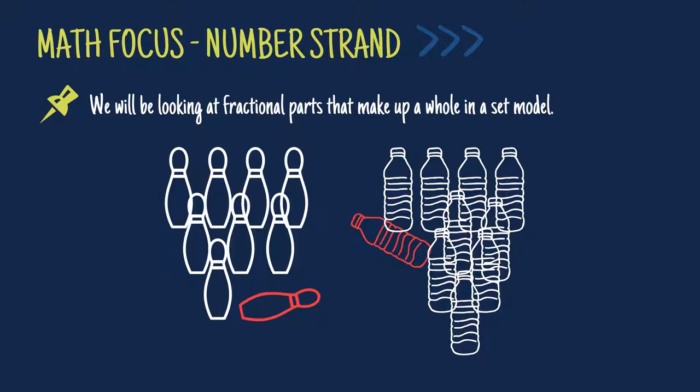By knocking down different objects from a set, learners will describe the fractional parts of the set based on how many objects remain standing from the whole set and how many objects have fallen from the whole set.